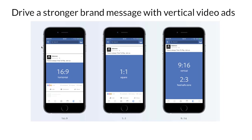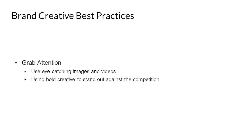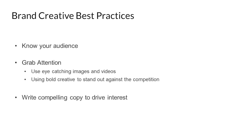When it comes to using video, it is recommended that you use the square format — the 1:1 aspect ratio. By using the square format, your video displays correctly even if the phone is tilted by the user.